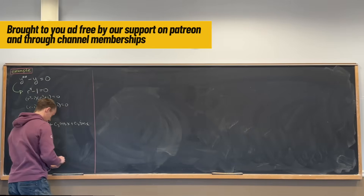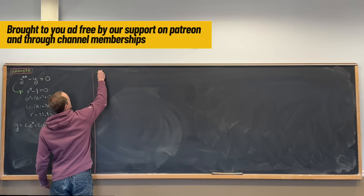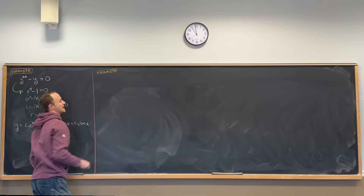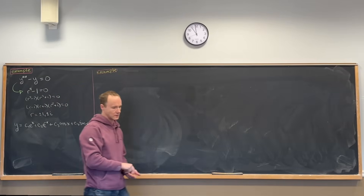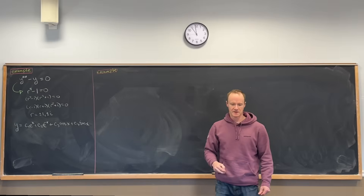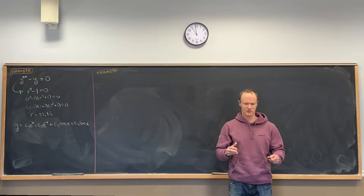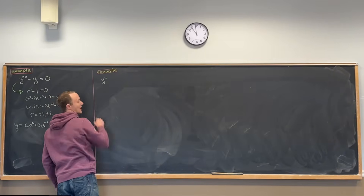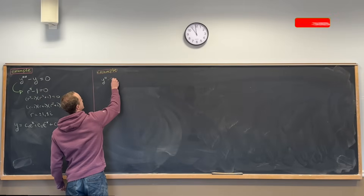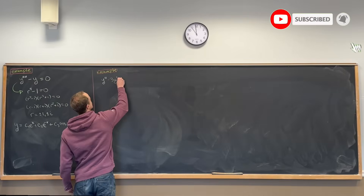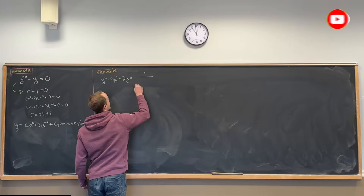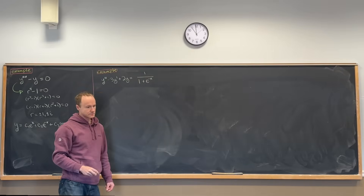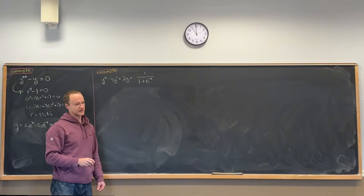Let's do something a little bit bigger to review the process, and we'll encounter an integral that I want to make sure everyone knows how to get at. So let's say we want to solve this differential equation: y double prime minus 3y prime plus 2y equals 1 over 1 plus e to the minus x.